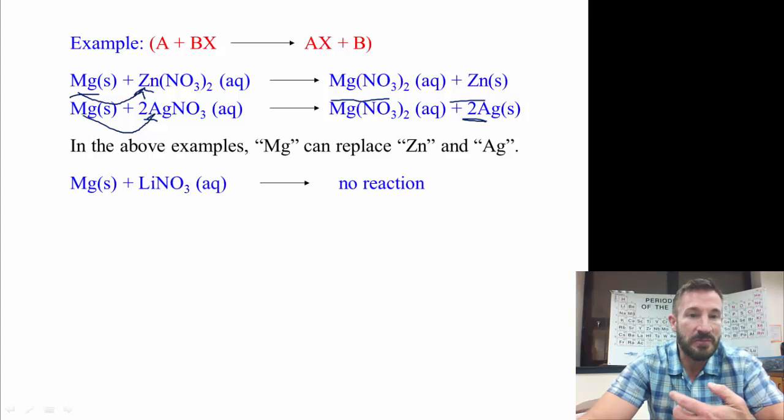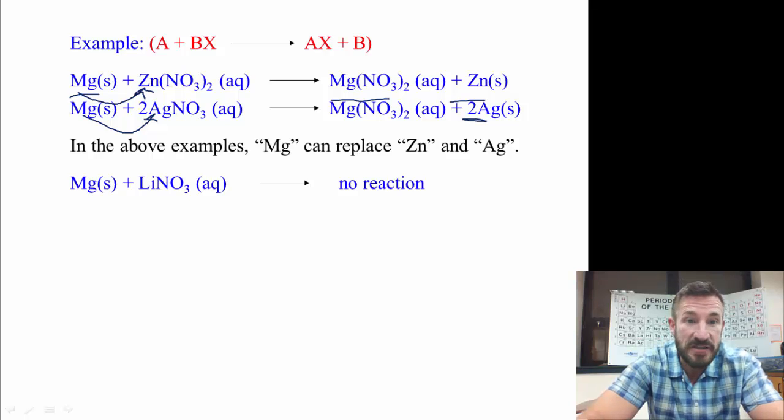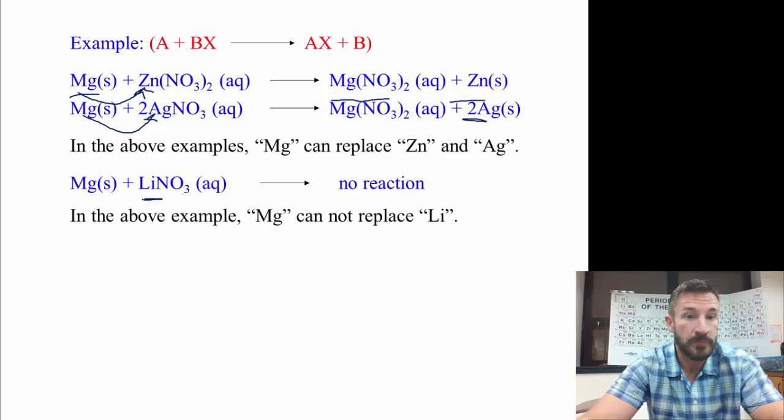Let's look at an example. If you put magnesium with lithium, remember we said lithium was one of the most reactive elements. Lithium cannot be displaced because lithium is more active than magnesium. So this would be no reaction. So in the above example, magnesium cannot displace lithium.